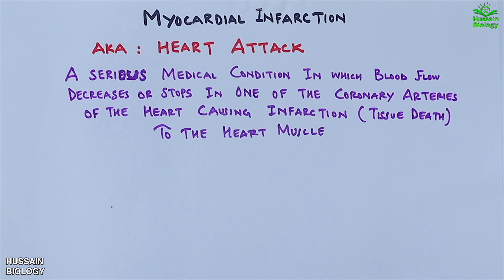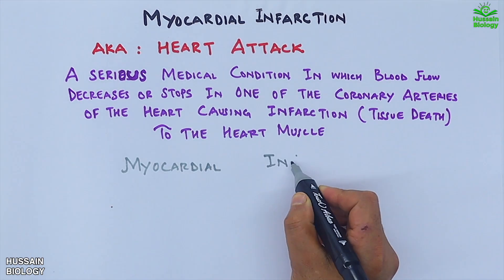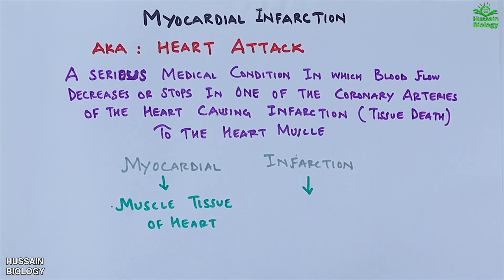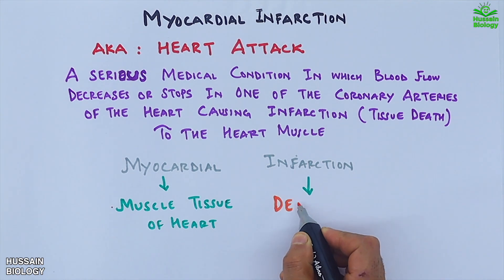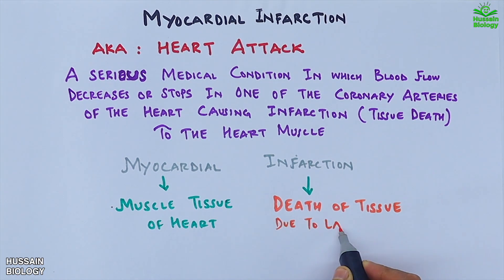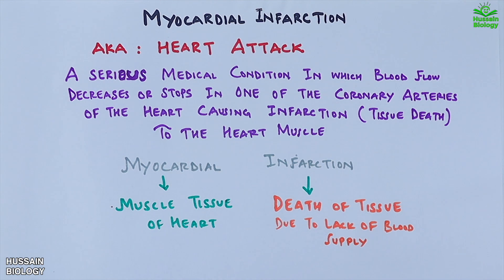The word 'myocardial' refers to the muscle tissue of the heart — 'myo' means muscle and 'cardial' relates to the heart. The term 'infarction' means the death of tissue due to lack of blood supply. So when you put it together, myocardial infarction literally means death of heart muscle tissue caused by insufficient blood flow.